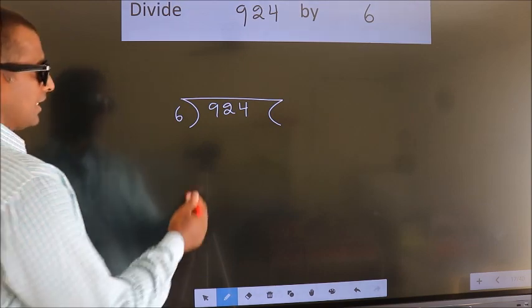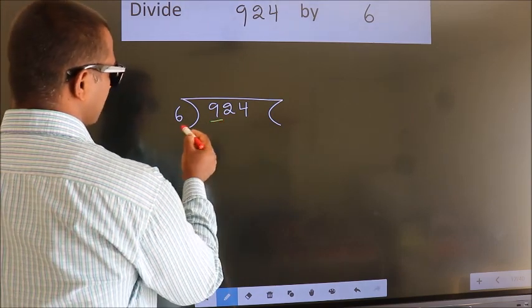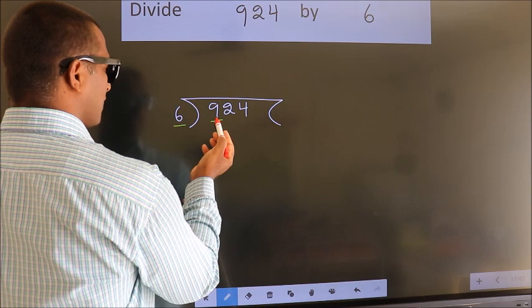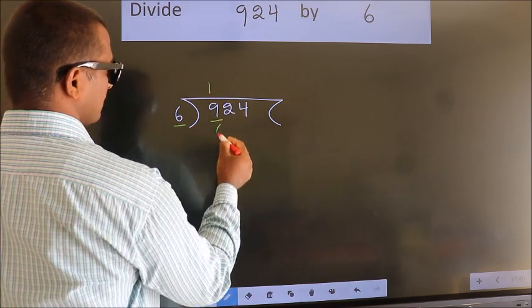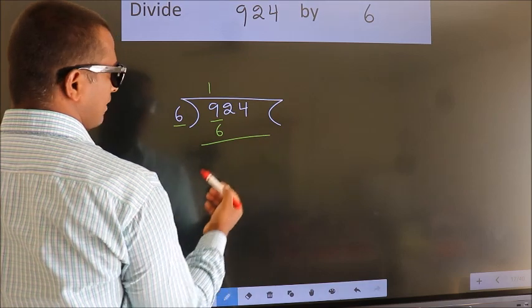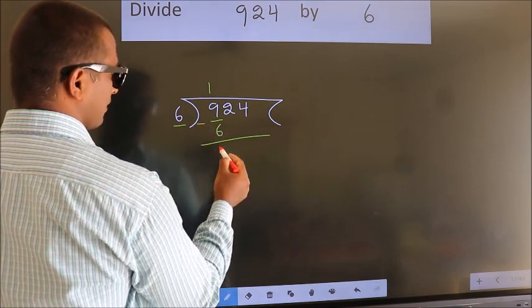Next, here we have 9, here 6. A number close to 9 in 6 table is 6 1 6. Now we should subtract. We get 3.